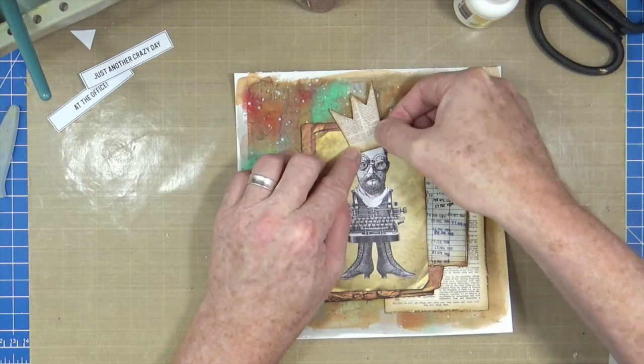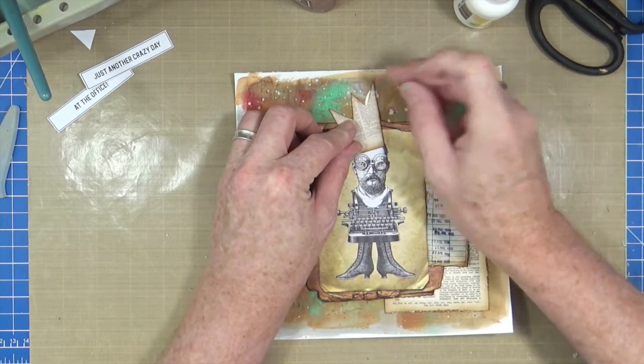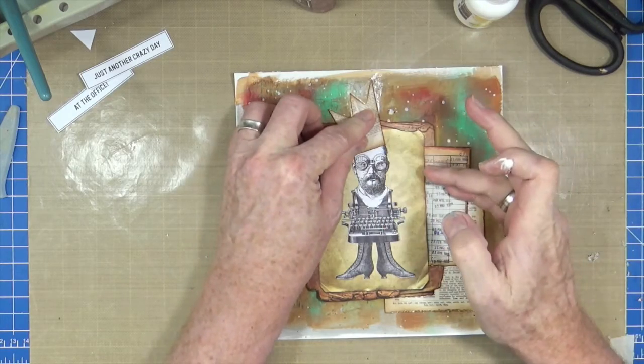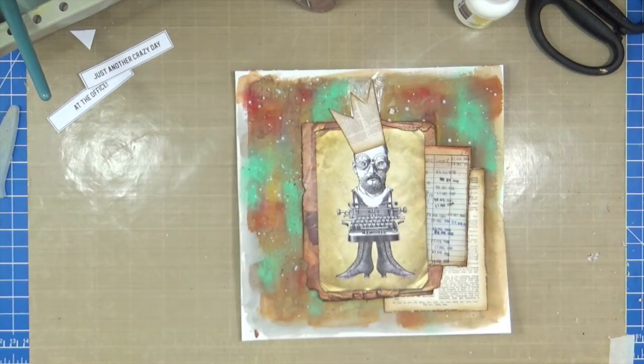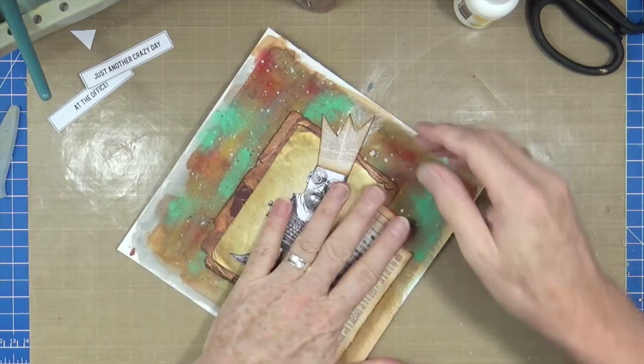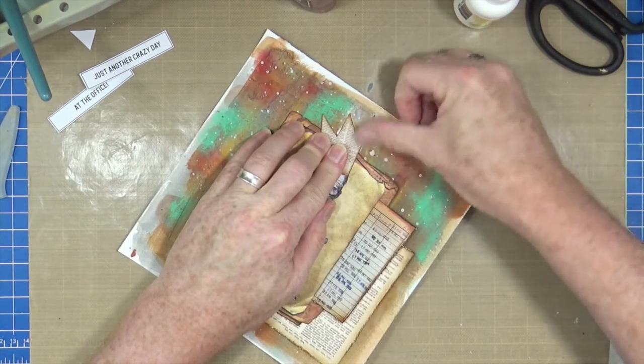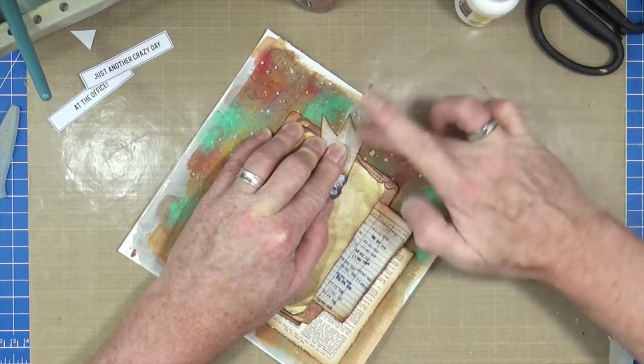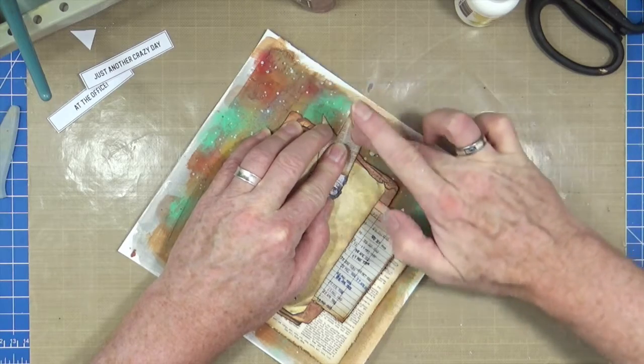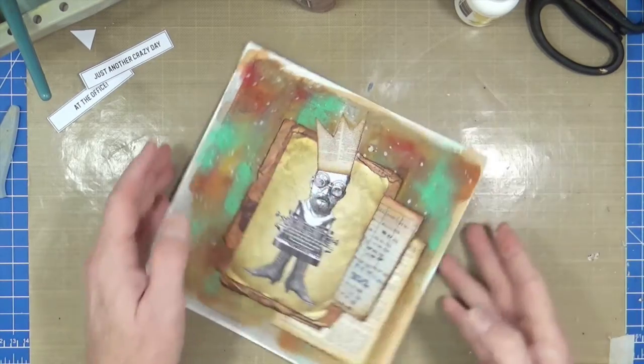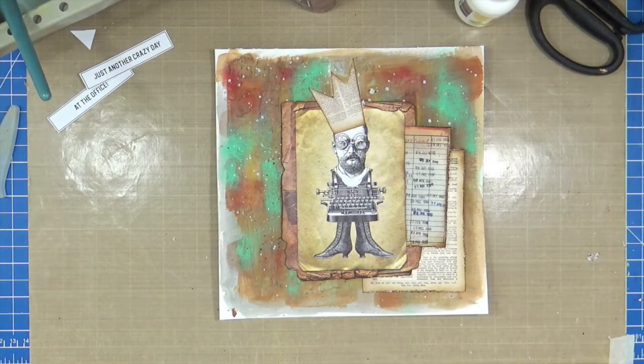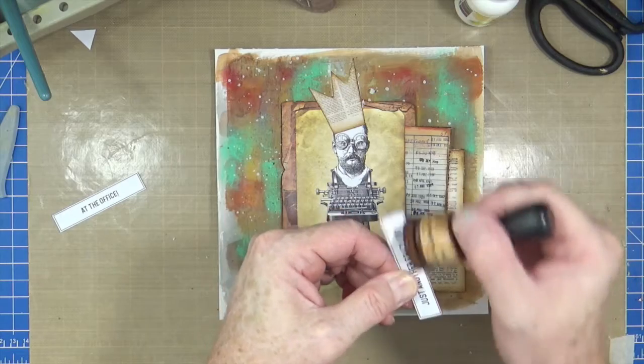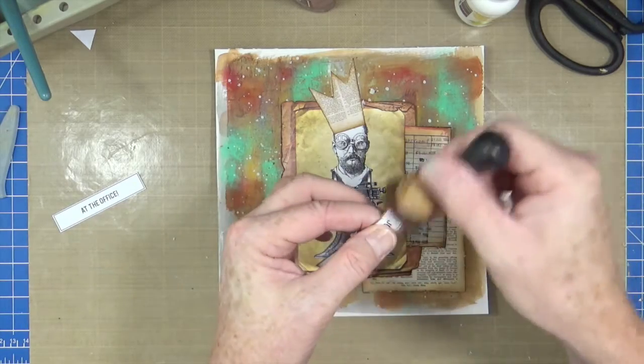So we'll sit that on there like so, just give that up. It does dry transparent so don't worry about it, coming out the top. Because we've used paint, it's not going to move anything off the surface. There we go. I like it. And then we can just go around, add a little bit of grunge to our quotes.